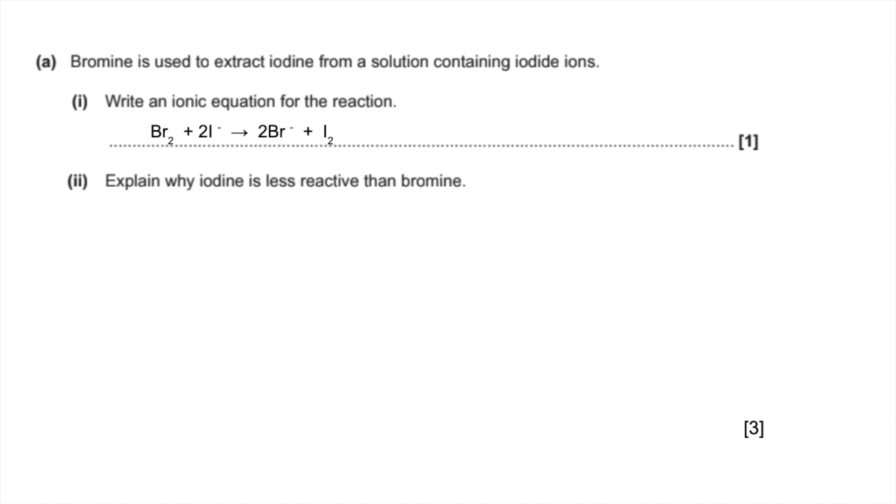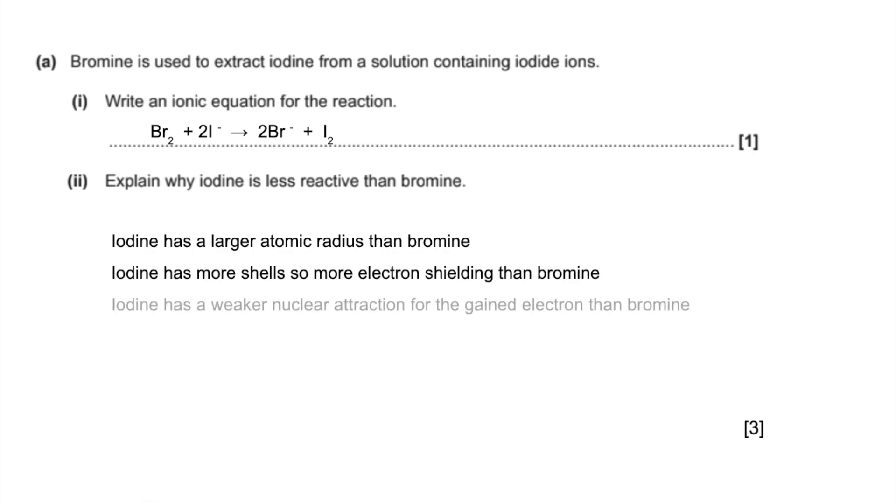Why is iodine less reactive than bromine? So iodine's got a larger atomic radius than bromine. Iodine's got more shells, so it's got more electron shielding than bromine. And iodine, therefore, has a weaker nuclear attraction for the gained electron than bromine.